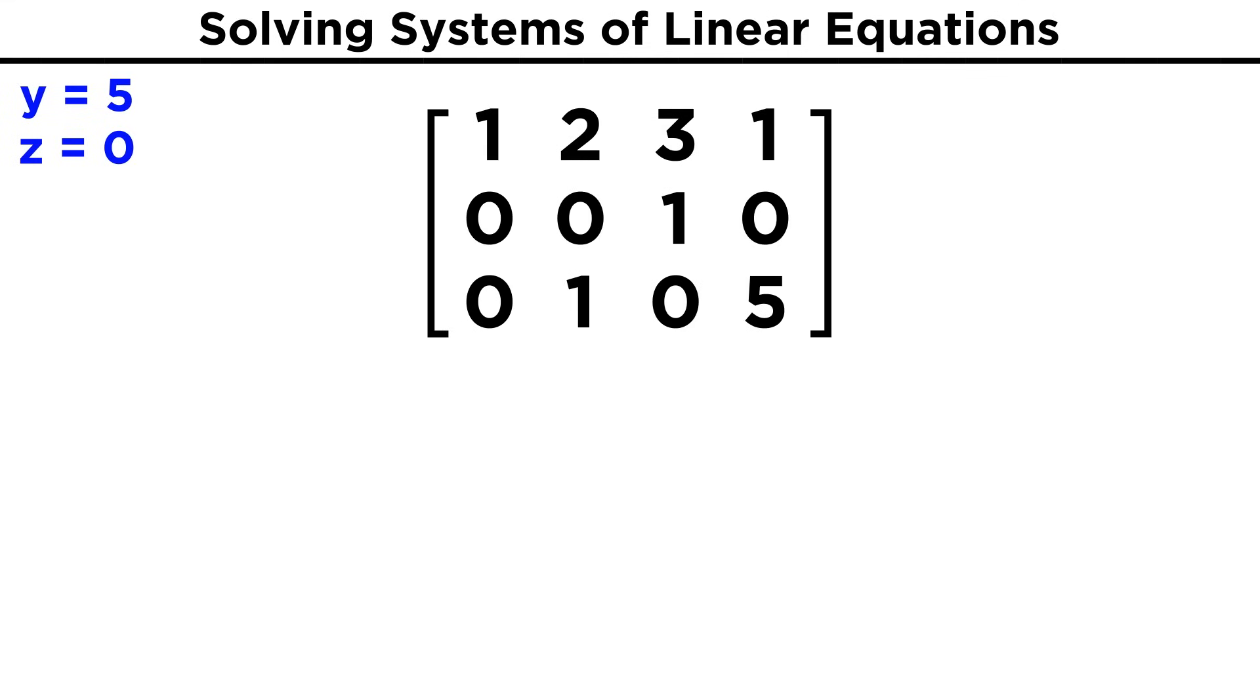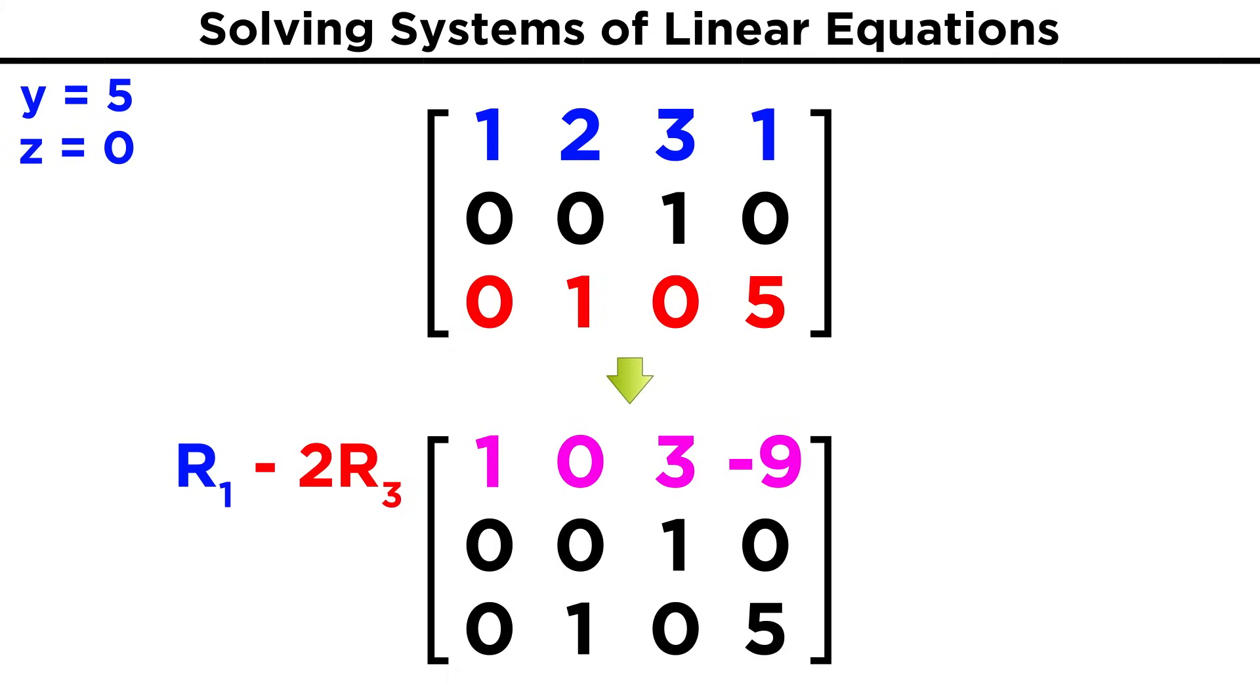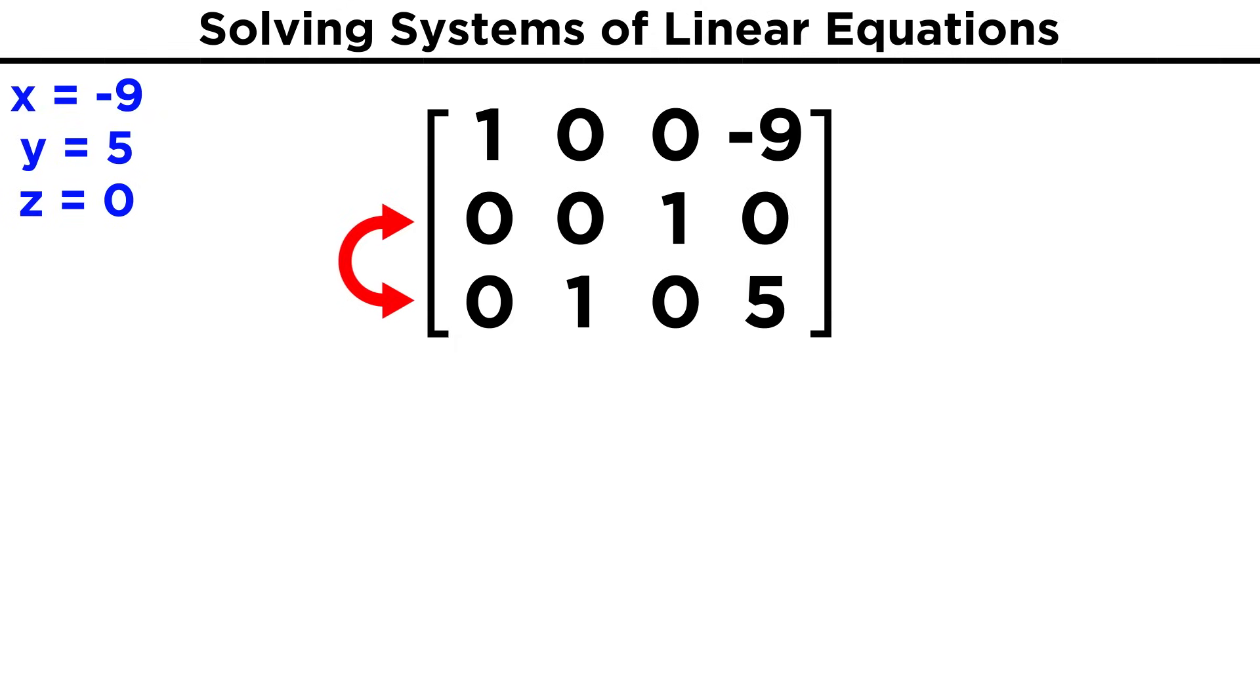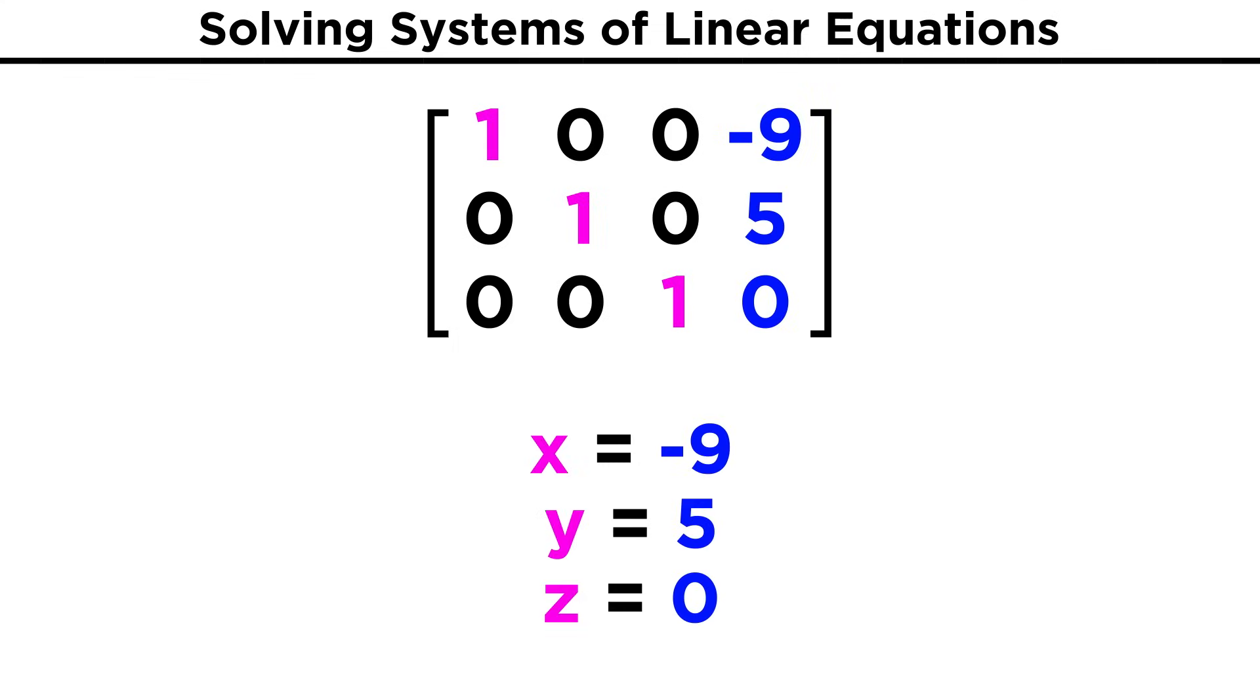And now it's easy to finish things off, because we have two variables isolated. The first row minus twice the third will give us 1, 0, 3, -9. And then from that, we can subtract three times the second row, to get 1, 0, 0, -9. Just for the sake of aesthetic, let's swap the position of the second and third rows so that we have the ones along the diagonal, and that leaves us with our solution spelled out for us nice and easy. X is -9, Y is 5, and Z is 0.